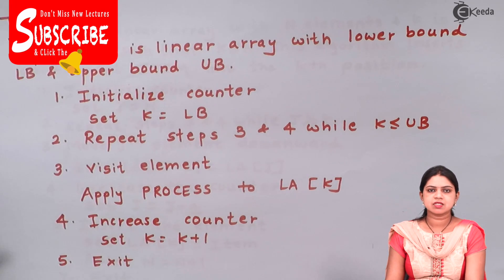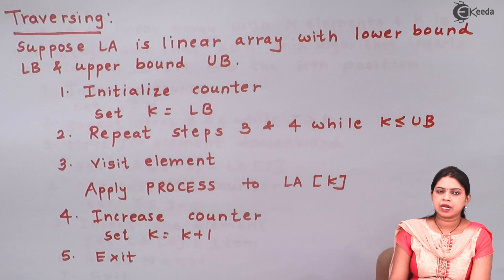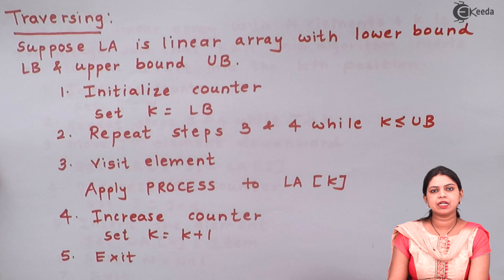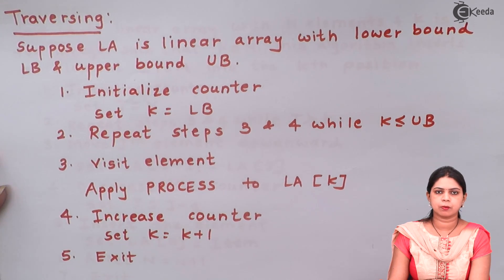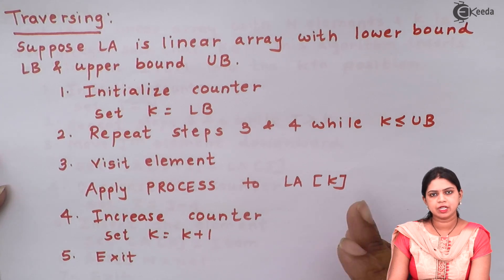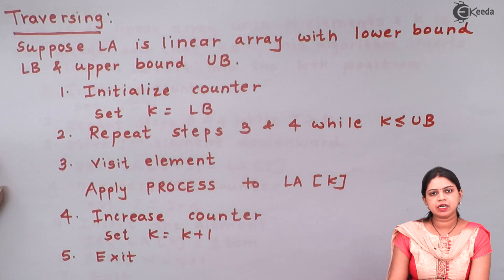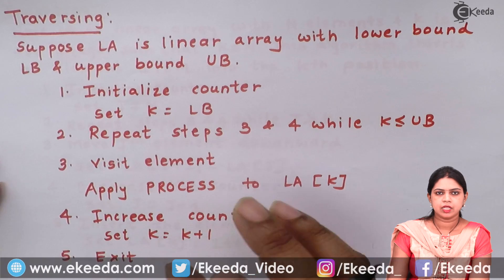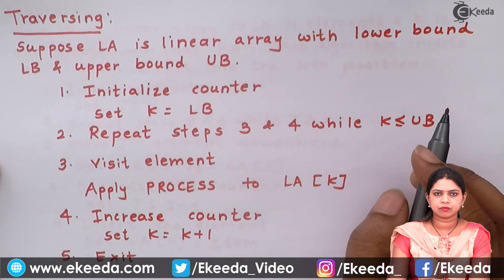Now the next thing which we have to study is algorithms. At the beginning of this chapter we have studied various types of data structure operations. There are total 6 types of data structure operations: Traversing, searching, merging, sorting, inserting, and deleting. So for every data structure operation we have some algorithm. In this, first we will start with the traversing in array.